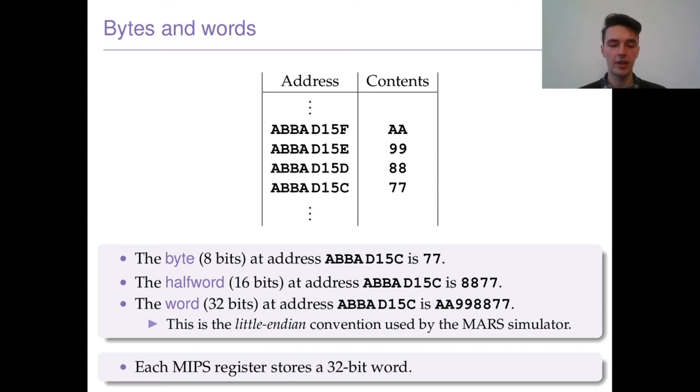Let's have a look at how we read them from memory. If we look at the address ABBAD15C at the bottom there, the byte that is stored there is 77. But we can get a little bit more information out of it by introducing the idea of words and half words. The half word at ABBAD15C is comprised of the contents of the address register immediately above it and itself, so that would be 8877 in this case.